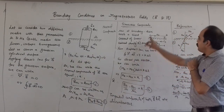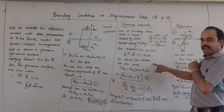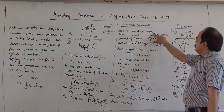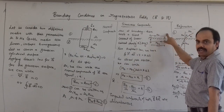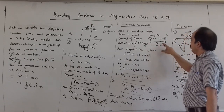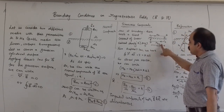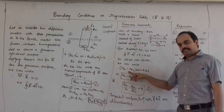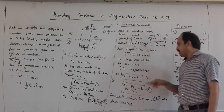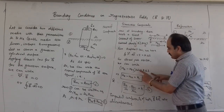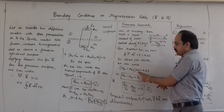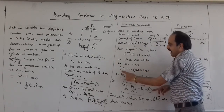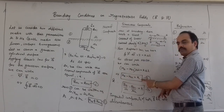For the closed path ABCDA we can write the tangential component HT1 and the length will be delta L, so HT1 times delta L. For the lower component in the opposite direction we get HT2 times delta L, giving HT1 minus HT2 times delta L. Since delta L is not equal to zero, it can be cancelled out and we get HT1 minus HT2 is equal to K.